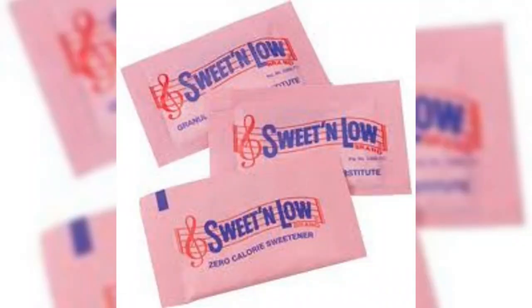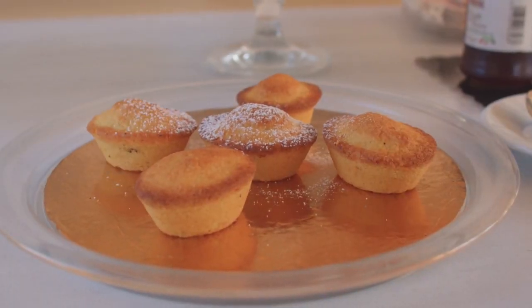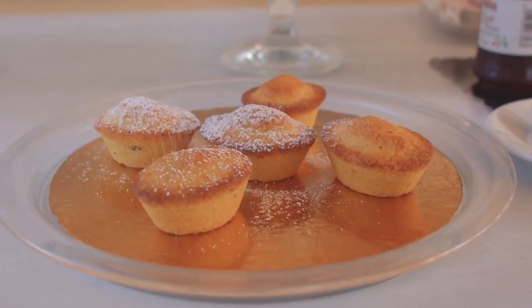Next on our list is saccharin. You'll find it in diet sodas, baked goods, jams, and jellies.